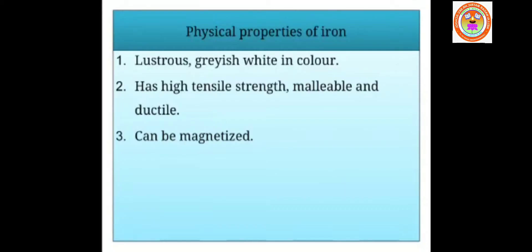Iron is malleable and ductile — it can be beaten into sheets and drawn into wires. Very big electromagnets are made with iron, so iron can be magnetized. To summarize the physical properties: iron is lustrous, grayish-white in color, has high tensile strength, is malleable, ductile, and can be magnetized.